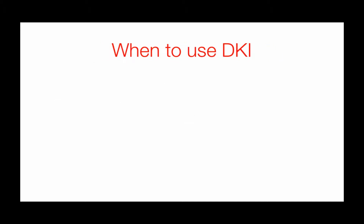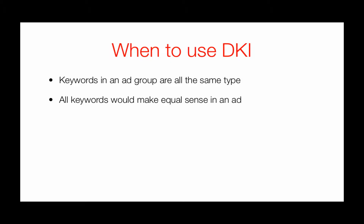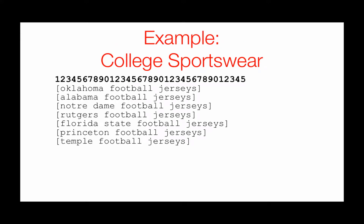So when should you use DKI? Only when all the keywords in an ad group are the same type, and they would all make equal sense in an ad. For example, college sportswear — say you sell football jerseys for 150 different colleges. You can see Oklahoma football jerseys, Alabama football jerseys, Notre Dame football jerseys, etc. You'll notice they're all exact match with square brackets front and back. That's important.